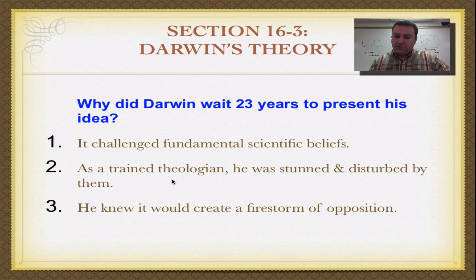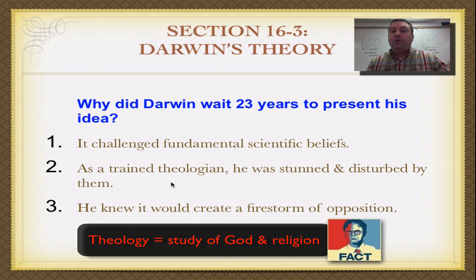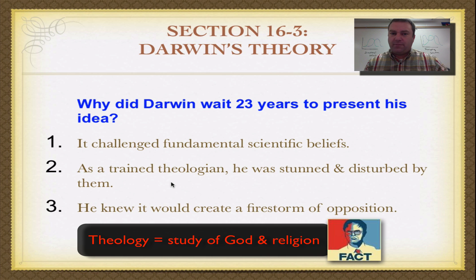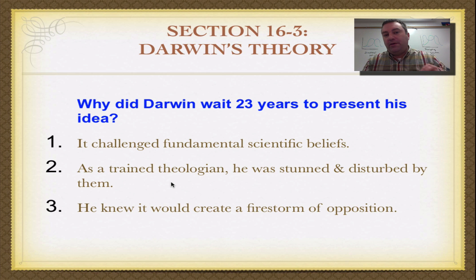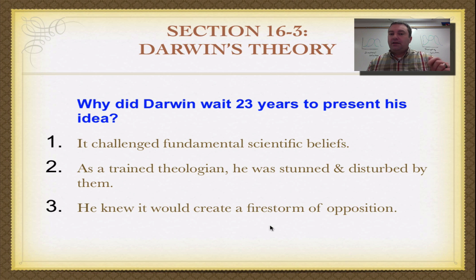With Charles entering the fold with his theory of evolution, he was basically going against the teaching of religion at the time. He knew that would be an issue, considering most scientists held their religious viewpoint. He also had a degree in theology, so he really understood the religious aspect — he was kind of stunned and a little disturbed by it. He understood why people believed what they did, and knew it would create a firestorm of opposition. And he was correct.